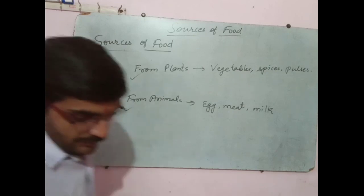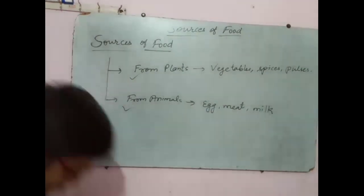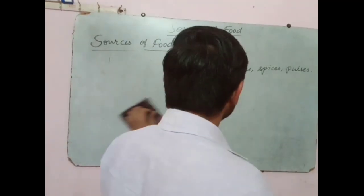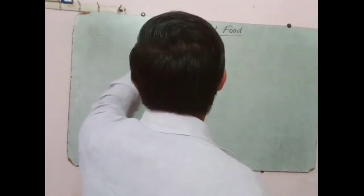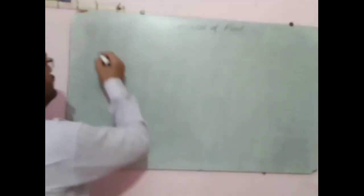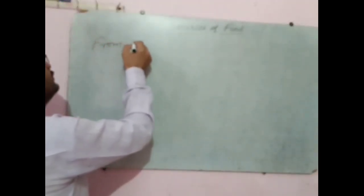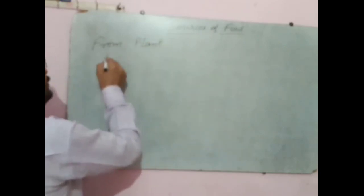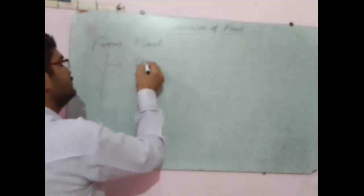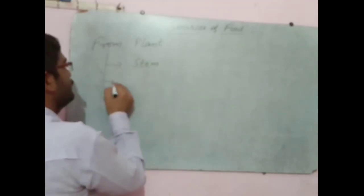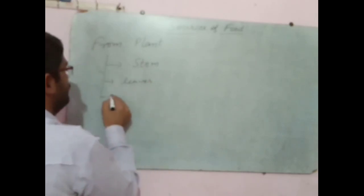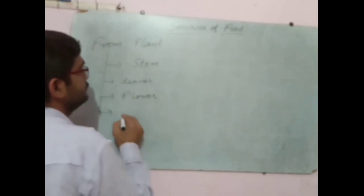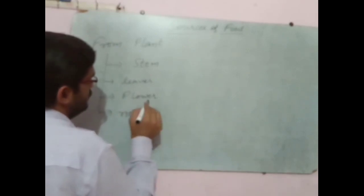From plants, the food which we get is not of the same variety — or we can say same kind. The food we get from plants is not of the same kind. From plants, we can get from stem, from leaves, from flowers, from roots.